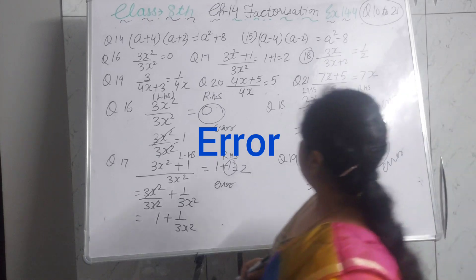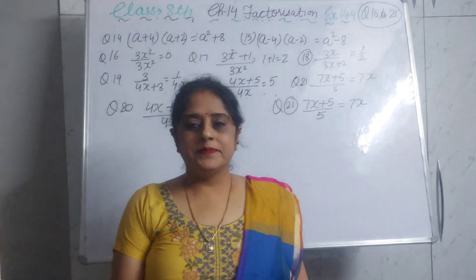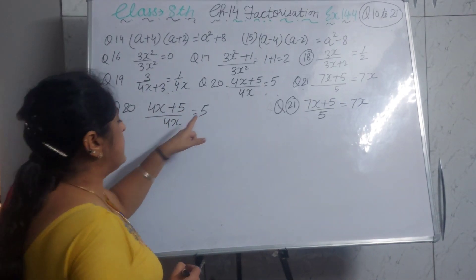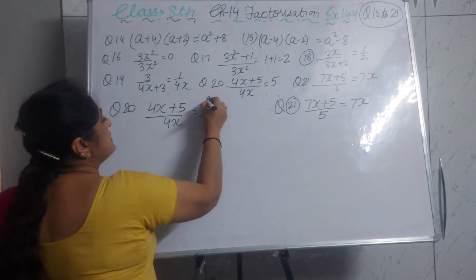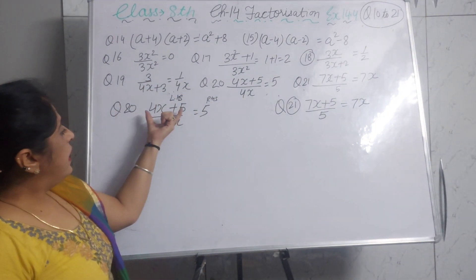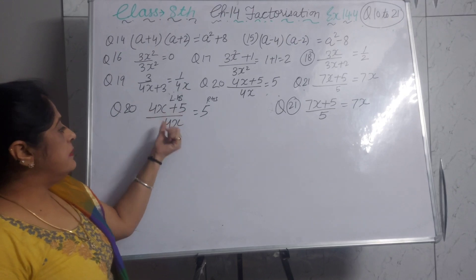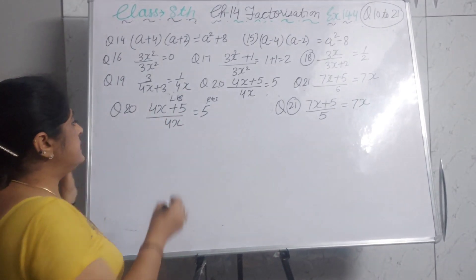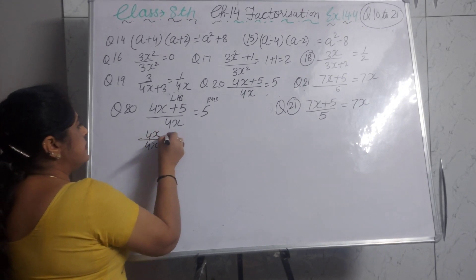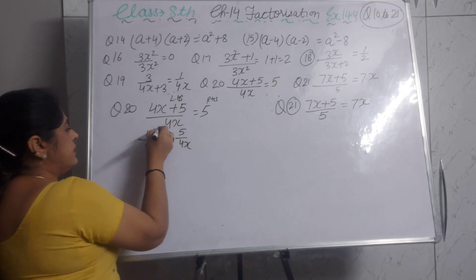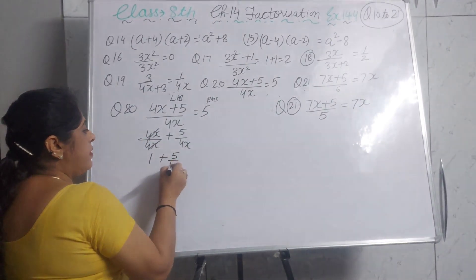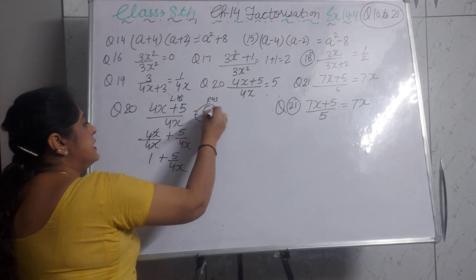Question 20: (4x + 5) ÷ 4x = 5. Here the numerator has two terms and the denominator is a single term, so we can write it separately: 4x/4x + 5/4x = 1 + 5/(4x). The 4x terms cancel to give 1, and 5/4x remains. The error was writing only 5 and dropping the 1 and the 4x denominator.